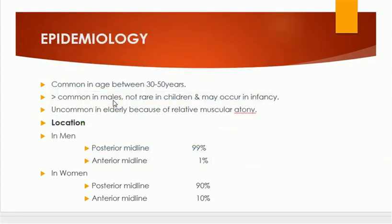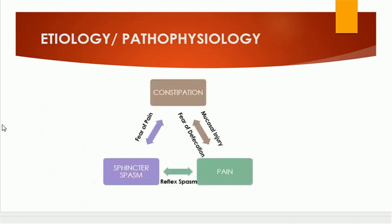So ninety-nine percent of cases are at the posterior midline; only one percent are at the anterior midline. In women, on the other hand, anterior midline fissures are more common. This is the difference between men and women as far as the location of the anal fissure is concerned.